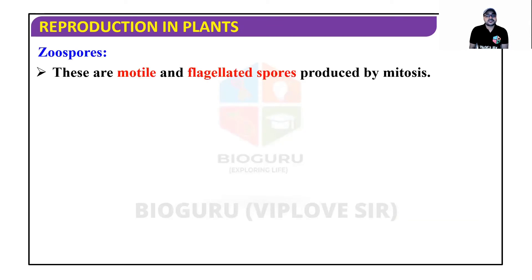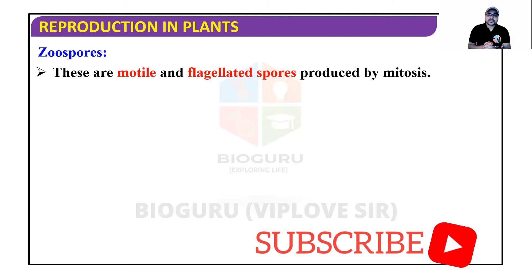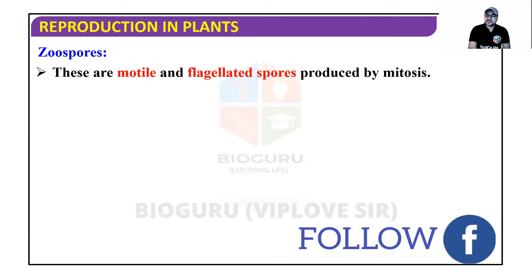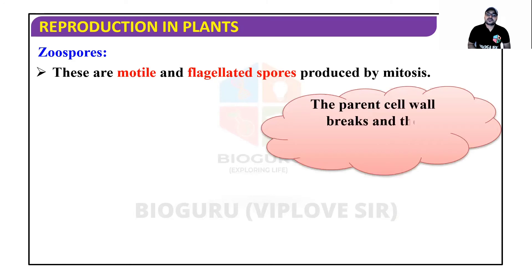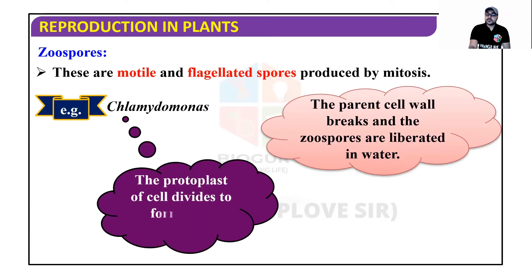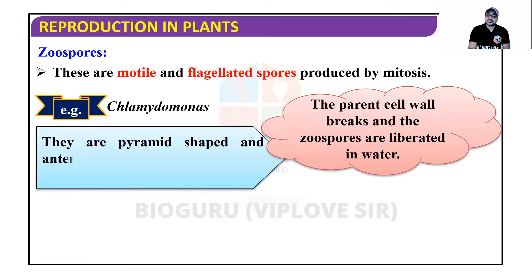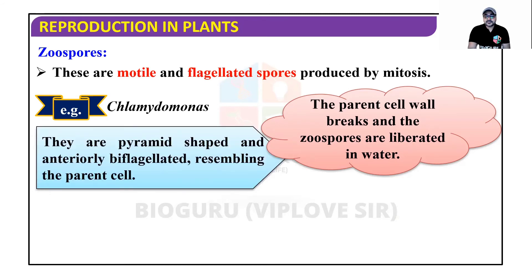Zoo spores are motile because of the 'zoo' prefix. These are motile and flagellated spores produced by mitosis. The parent cell wall breaks and the zoo spores are liberated in water. The protoplast of the cell divides to form 8 to 16 zoo spores; when the cell is ruptured the zoo spores come out and new individuals form. They are pyramid-shaped and anteriorly biflagellated, resembling the parent cell. Zoo spores are found in Chlamydomonas.